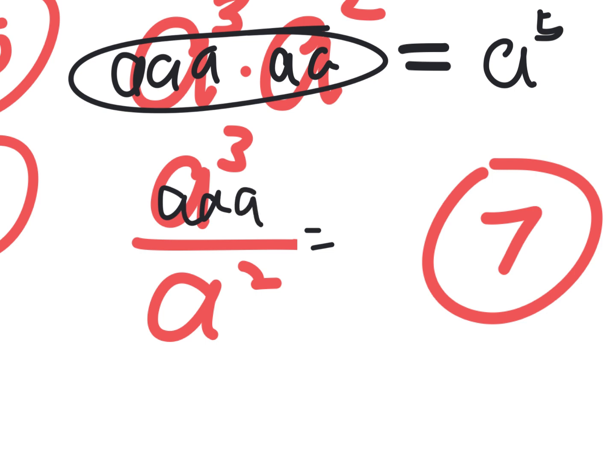But when these get confusing, just do this. This means A, A, A. This means A, A. And do you get two of them cancel? And you're left with just A, which is the same as A to the one.